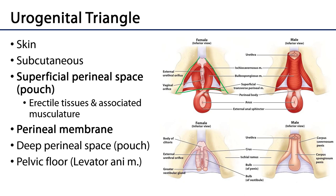This region of the perineum is going to be very complicated and contain a number of layers and structures within those layers. Much like most of the rest of the body, the most superficial layer is the skin, and deep to the skin we'll have the superficial fascia or the subcutaneous layer, and deep to the sub-q will be the superficial perineal space.